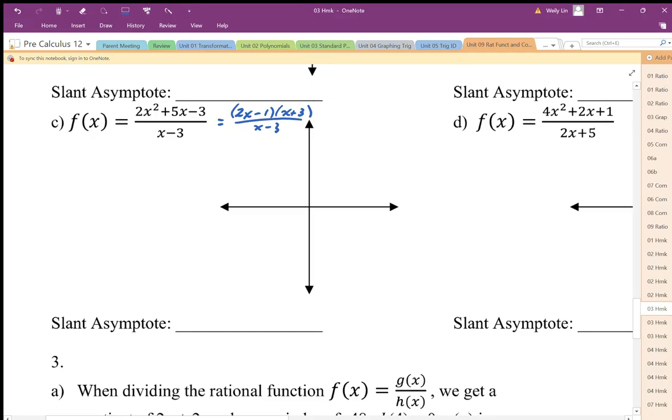Question C: if we have 2x squared plus 5x minus 3 over x minus 3, this function has the numerator which is one degree higher than the denominator, which means we are likely going to get a slant asymptote.